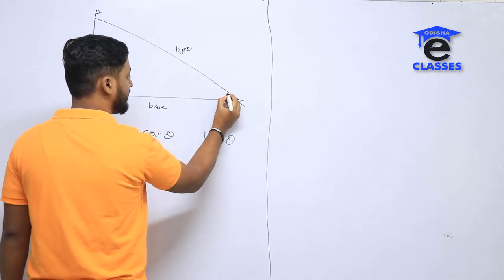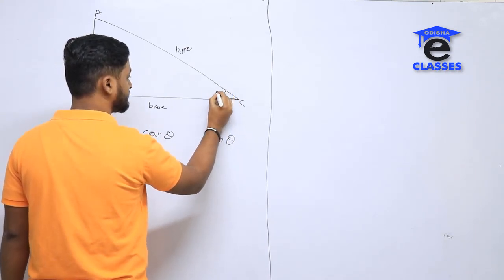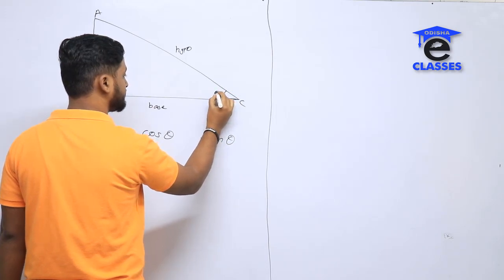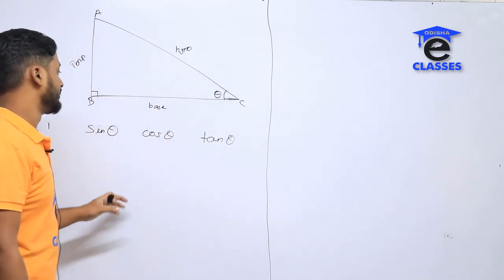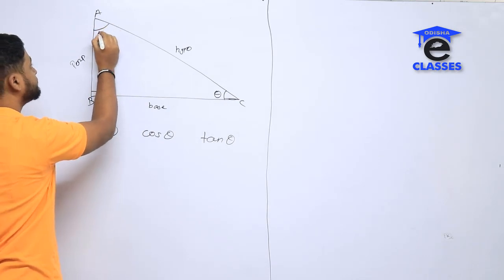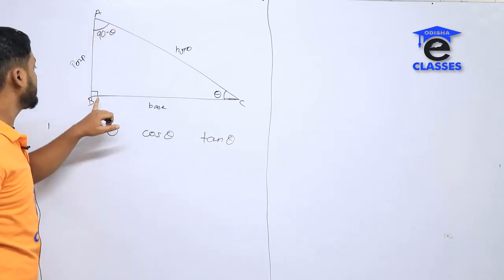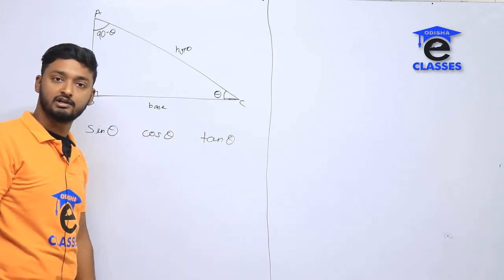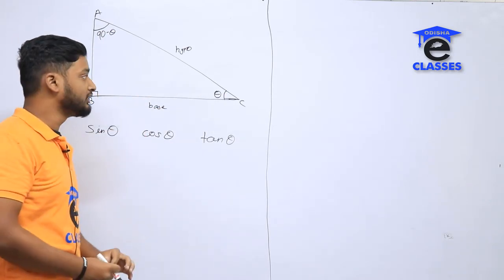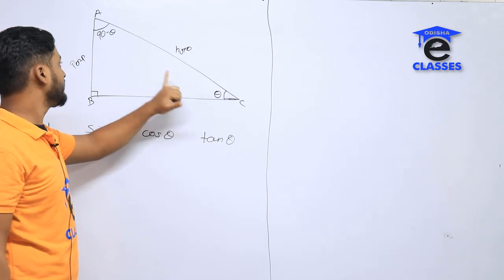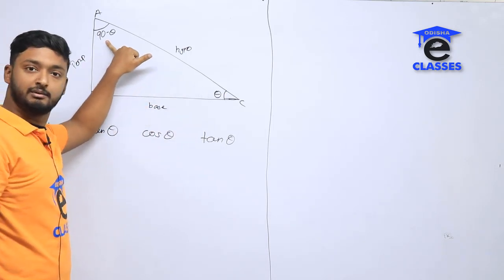Let's say I take this angle as theta. I'll see that angle as theta. So if we write it, this angle is 90 minus theta. This angle is 90 degrees. So if we write it, the remaining angle is 90 minus theta.